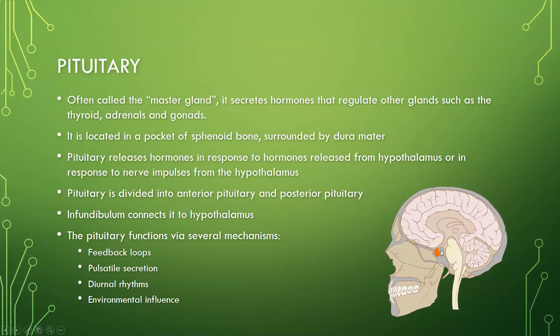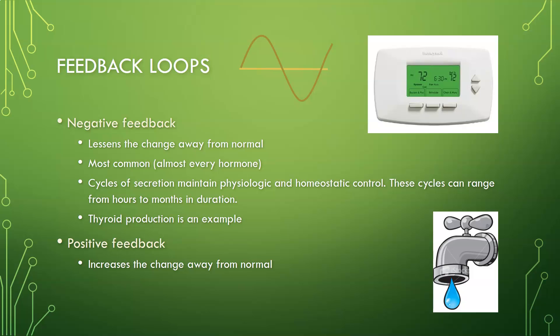The pituitary is divided into anterior and posterior portions. The anterior pituitary responds to hormones released from the hypothalamus, while the posterior pituitary responds to nerve impulses from the hypothalamus. The infundibulum is the stalk that connects the pituitary to the hypothalamus. The pituitary functions via feedback loops, pulsatile secretions, diurnal rhythms — day-night rhythms — and environmental influences, such as dehydration affecting antidiuretic hormone release.